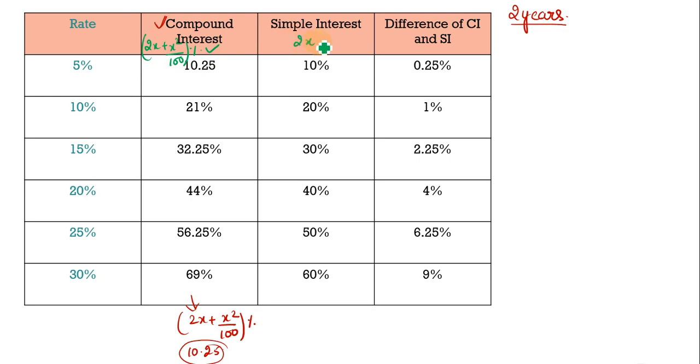You can use this formula if you want. This formula is for compound interest: 2x plus x squared upon 100 percent. For simple interest, the formula is 2x percent. And if we have to find the difference directly, then what will we do? Compound interest minus simple interest gives us x squared upon 100 percent. This is our difference of compound interest and simple interest. You can apply the direct formula here also.